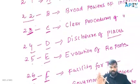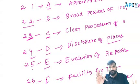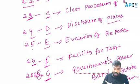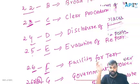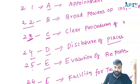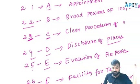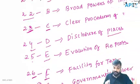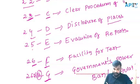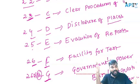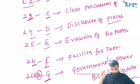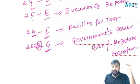You can easily answer now. Just remember A, B, C, D, E, F, G — A is 21, B is 22, and so on: 23, 24, 25, 26, 26ARB. A means appointment of drug inspectors. B is the broad powers of inspectors. C is the clear procedures of inspectors. D is disclosure of places where drugs or cosmetics are manufactured. E is the evaluation of reports of the government analyst. F is the facility for test — the right to test, where any person who purchased a drug or cosmetic can, on payment of prescribed fees, perform the test. G is the government's power to ban or regulate the manufacturing.